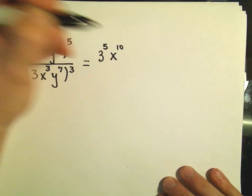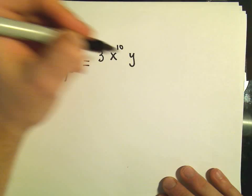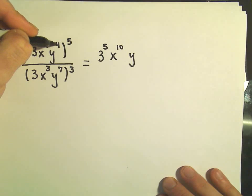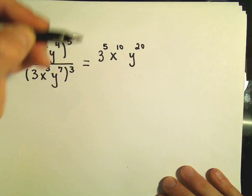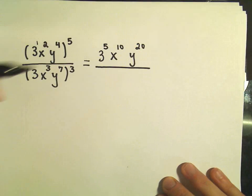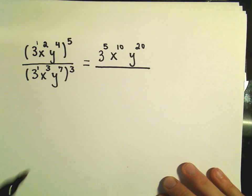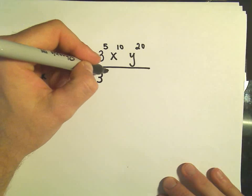And then we'll have our y, since it's 4 and 5, we multiply those, and that gives us to the twentieth power. Now on the bottom, again, I'm going to stick my little exponent in there. We would have 3 raised to the third power.